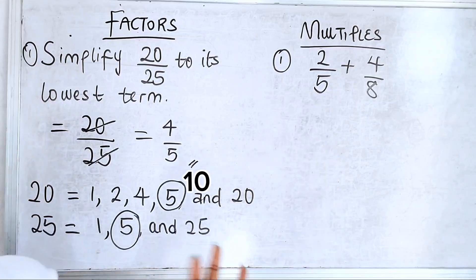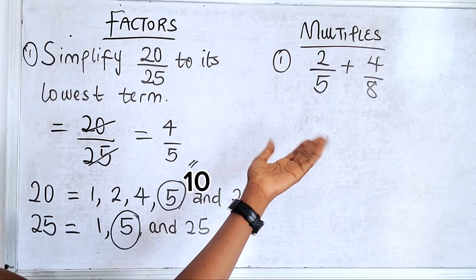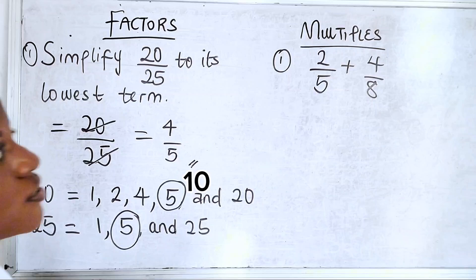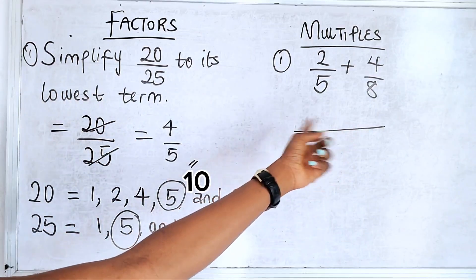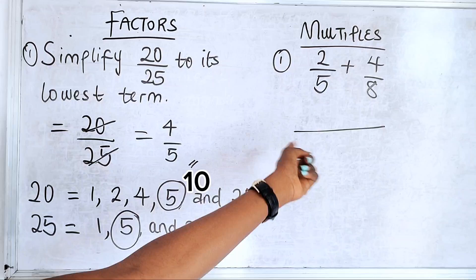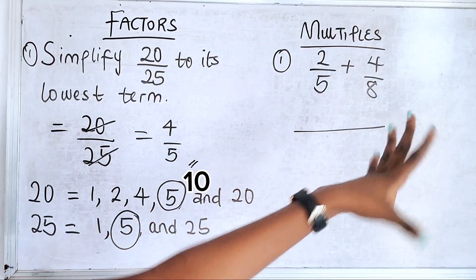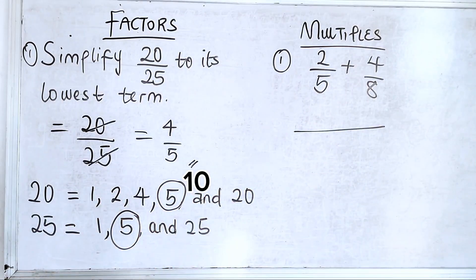So now for cases of multiples, we've done this in the previous class, how to add and subtract fractions. We said that the first things first is to find the common lowest common multiple.